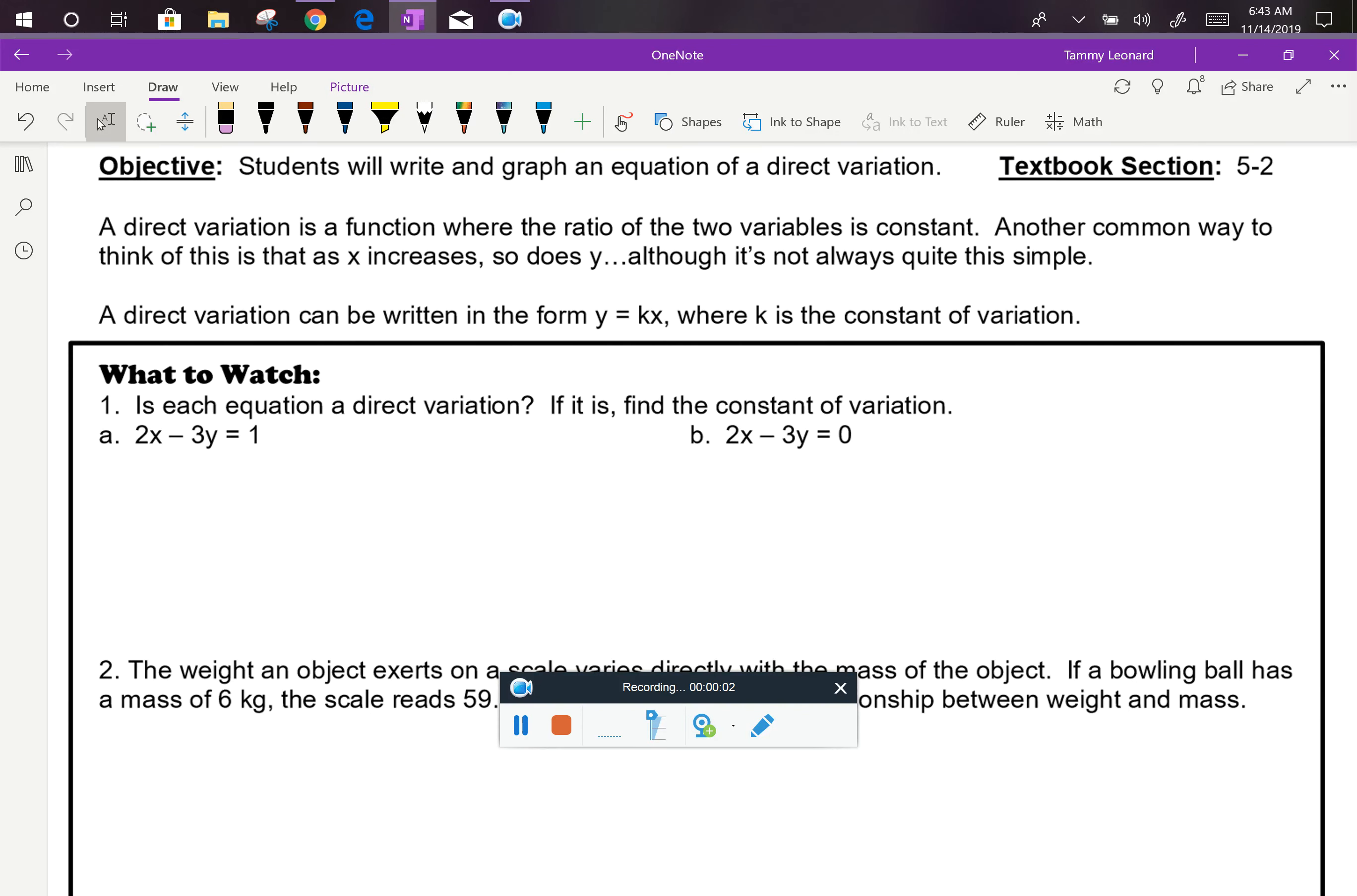We can see in the definitions above that a direct variation is a function where the ratio of the two variables is constant. In other words, it's a very basic type of linear function.